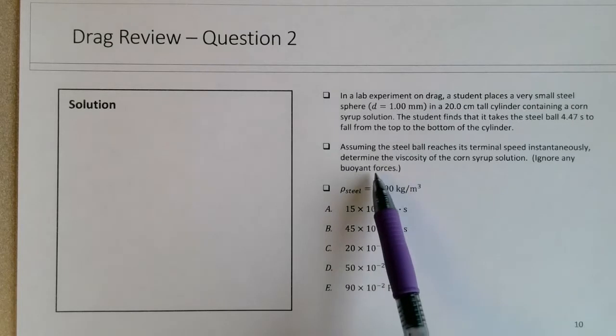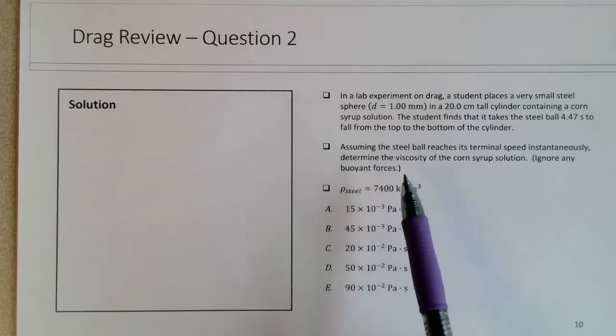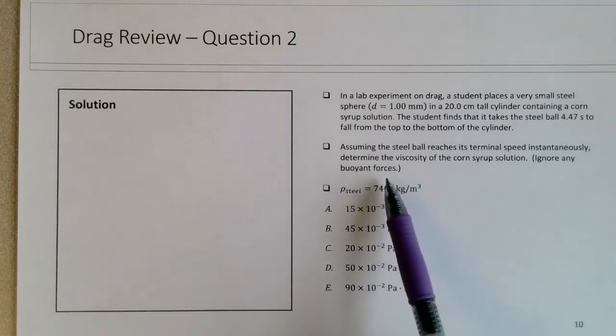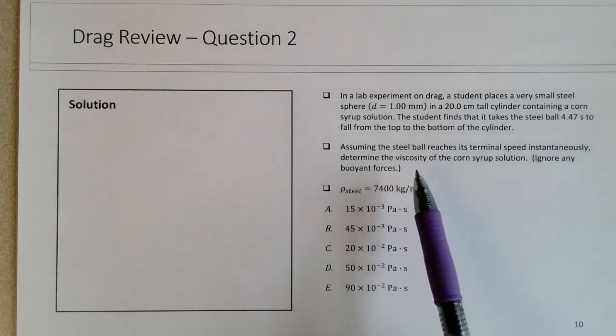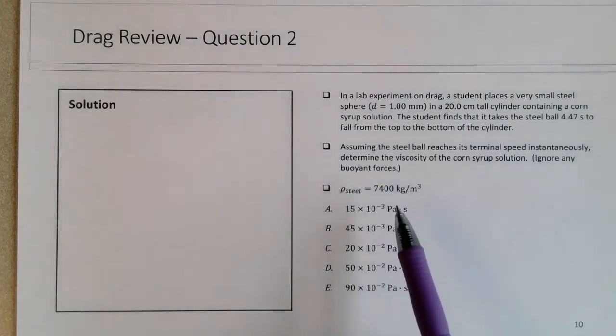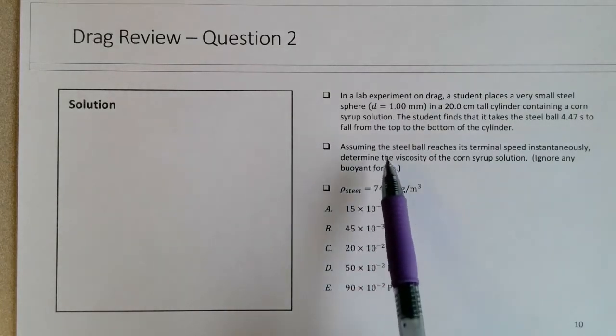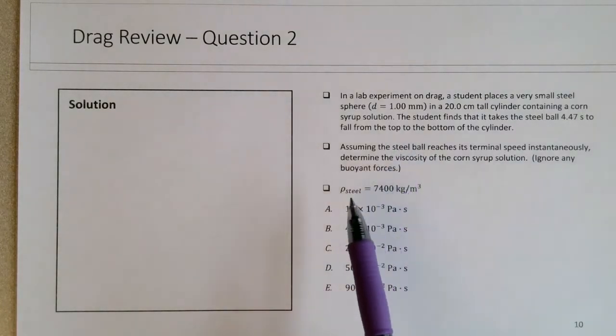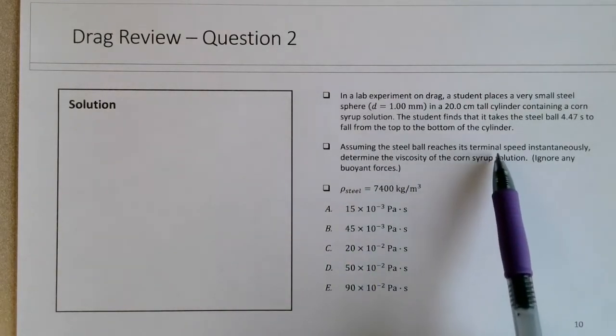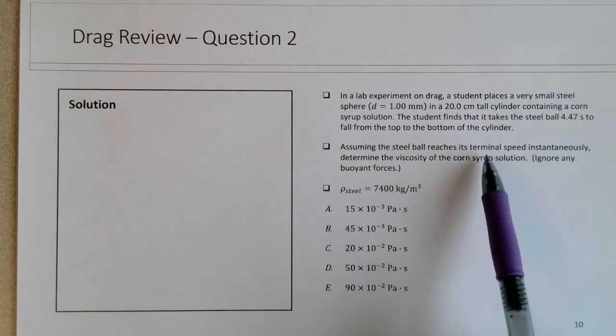So ignoring the buoyant force—any object in a fluid does experience an upward buoyant force, but if you have not studied buoyancy at this point, this is why we're ignoring the buoyant forces in this question. There is definitely a non-zero buoyant force on the sphere, but let's ignore that for now. If it's falling, we're just going to assume that there's an upward drag and a downward weight force. If it's falling at its terminal speed, the net force on the object must be zero.